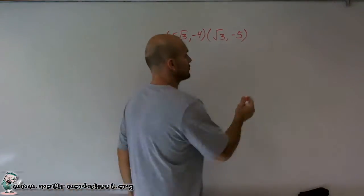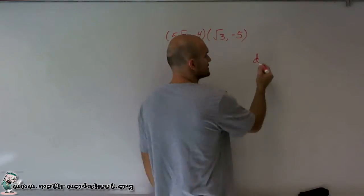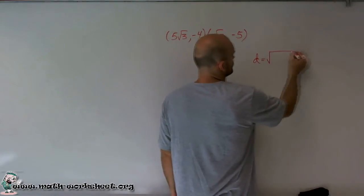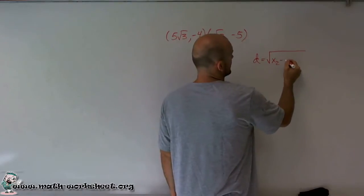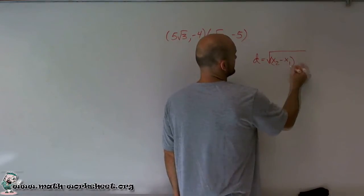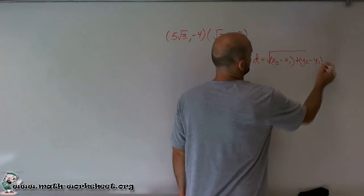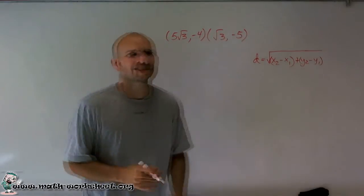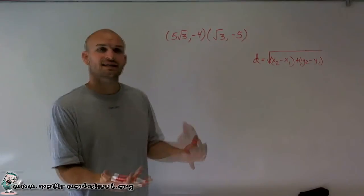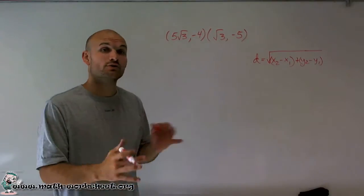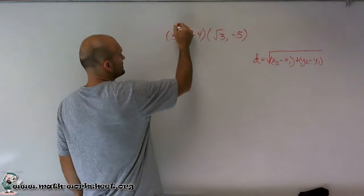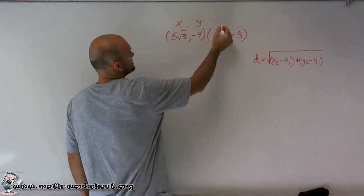And what the distance formula is, is the distance between any two points is equal to the square root of x2 minus x1 plus y2 minus y1. And just to go through again what exactly x2 and x1 are, or y2 and y1, remember each of these are a coordinate point, meaning they have an x and a y coordinate.